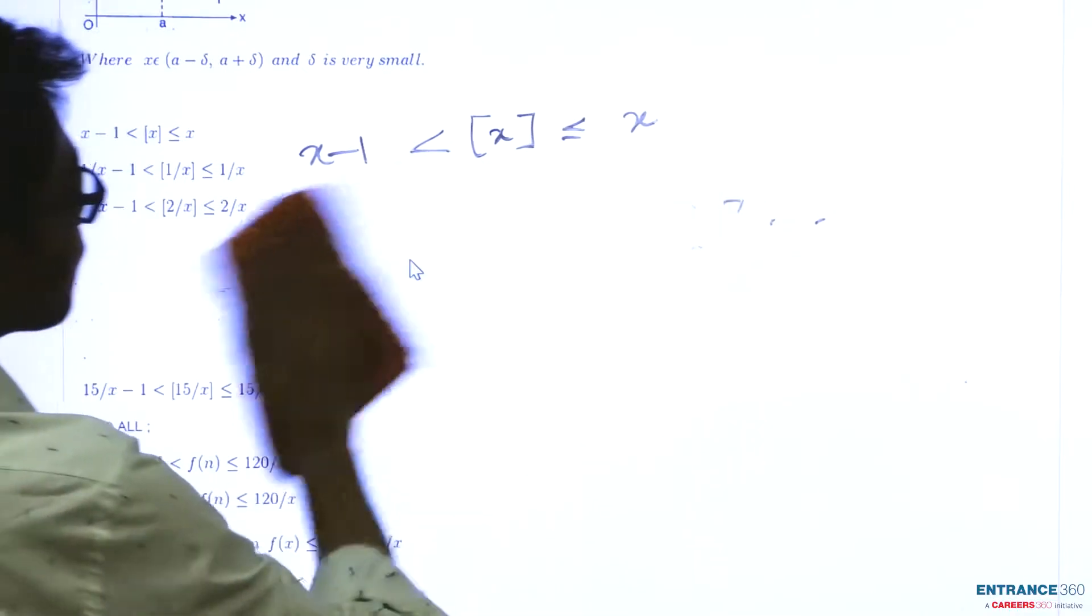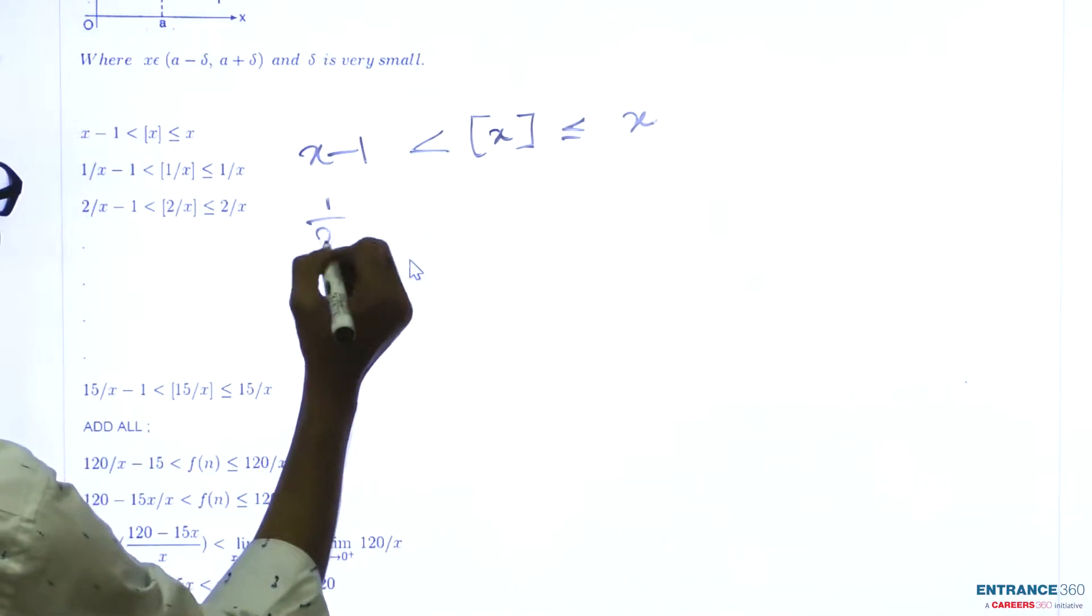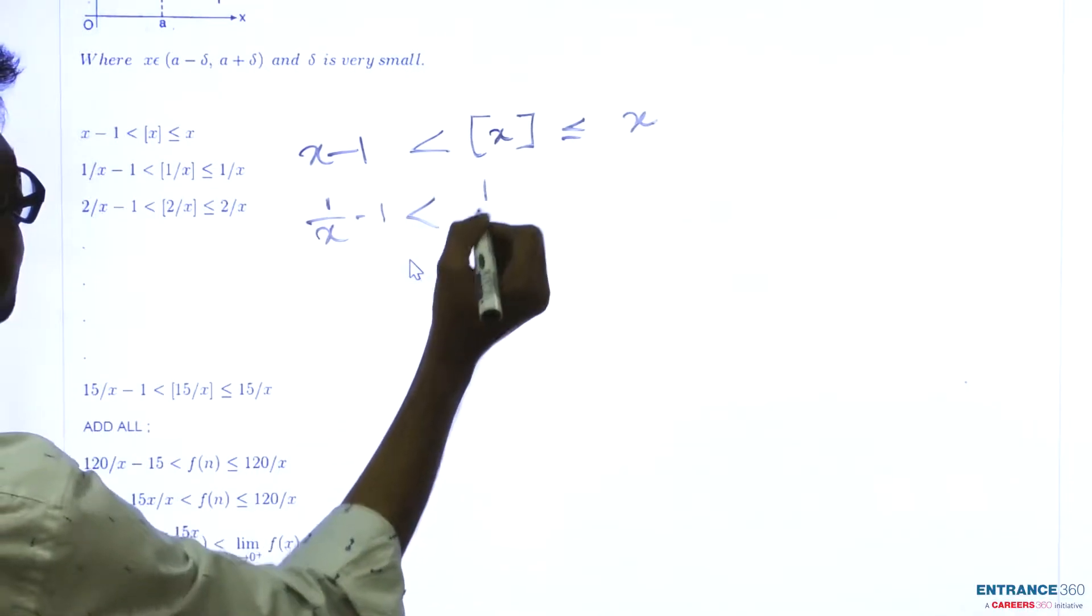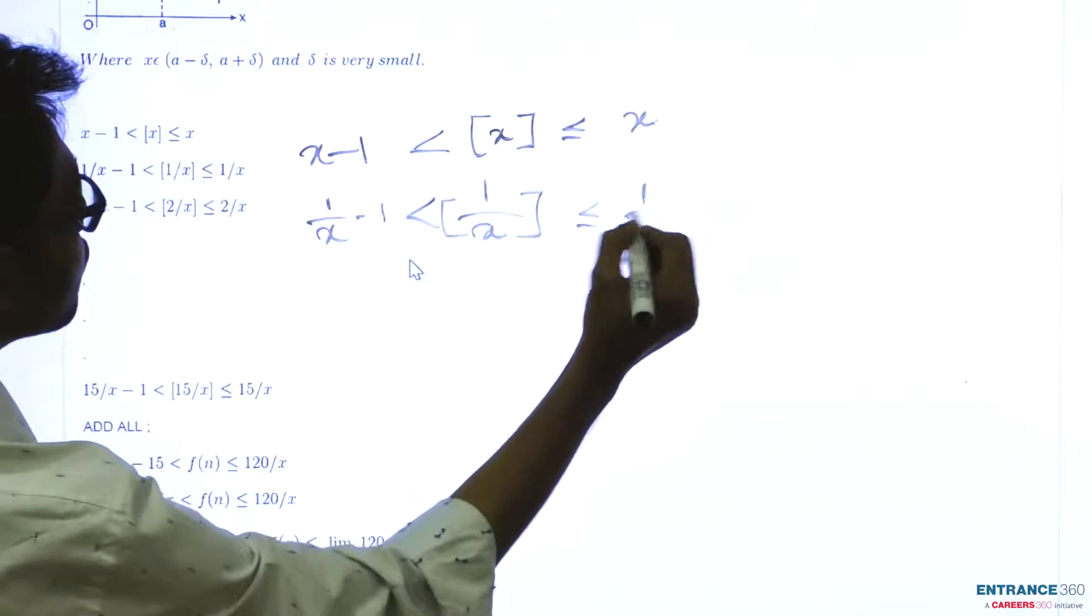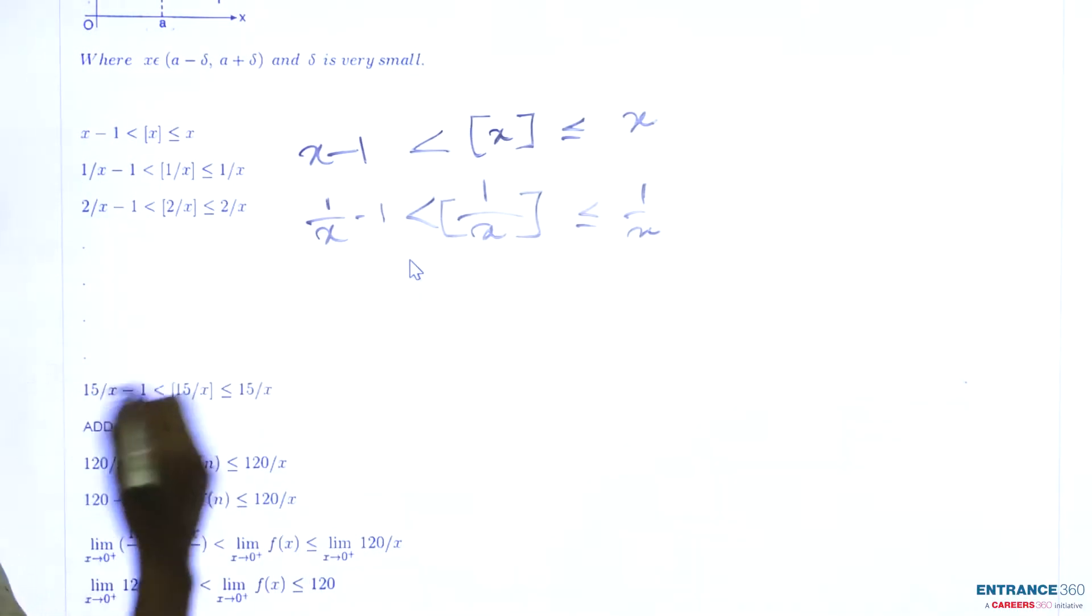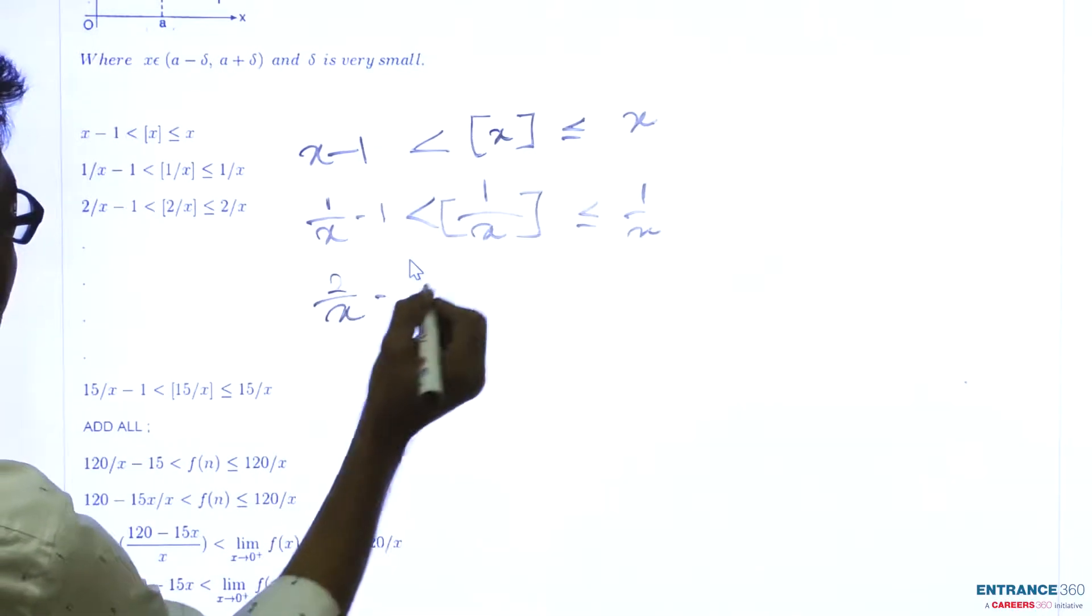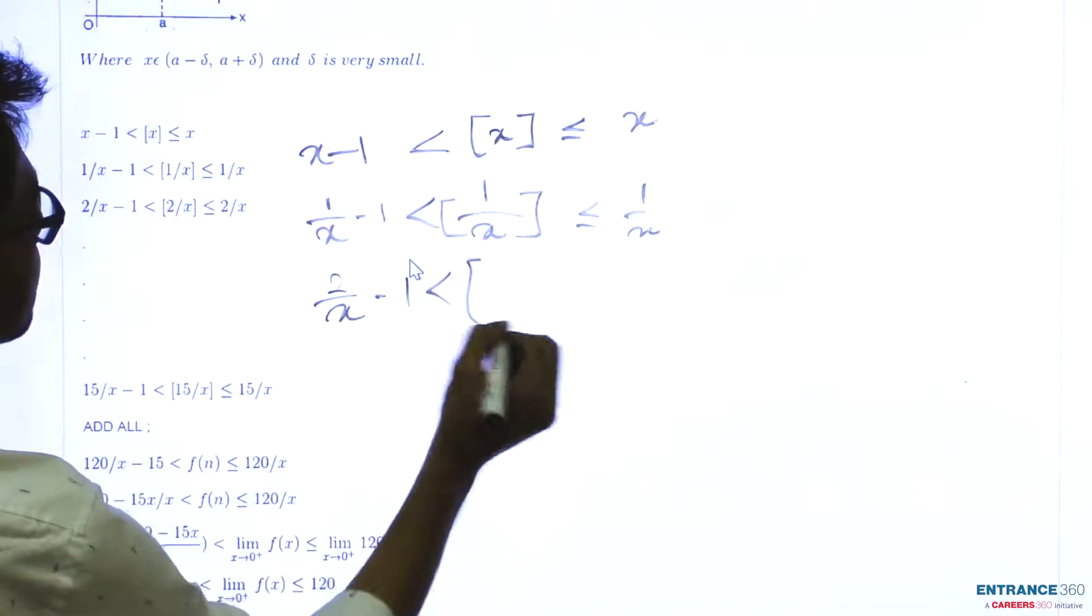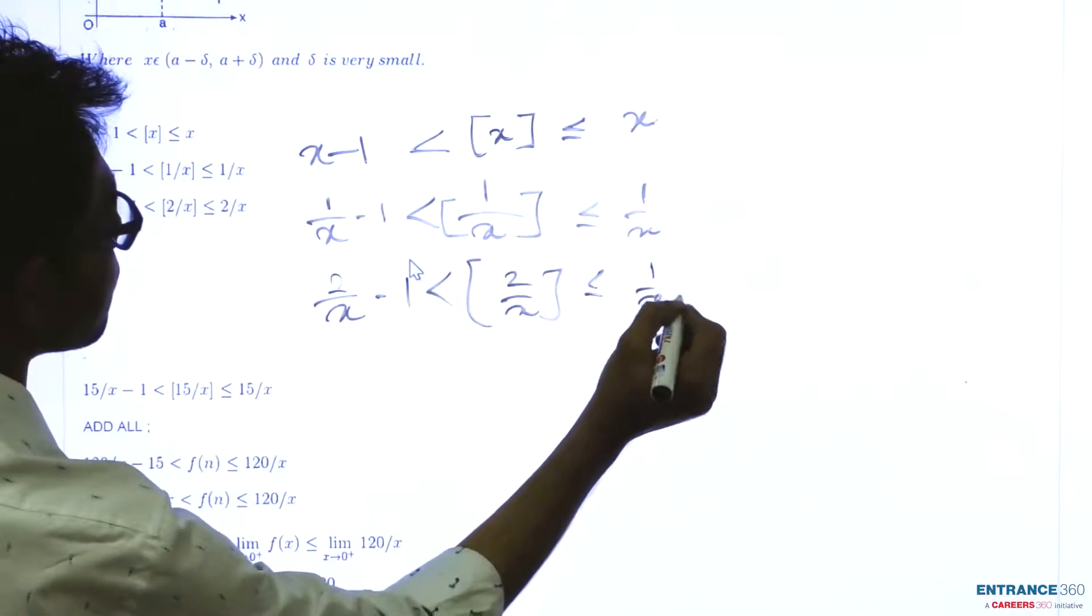Now, what we will do here is replace x with 1/x. So 1/x minus 1 is less than the greatest integer part of 1/x, which is less than or equal to 1/x. Second, 2/x minus 1 is less than the greatest integer of 2/x, which is less than or equal to 2/x.